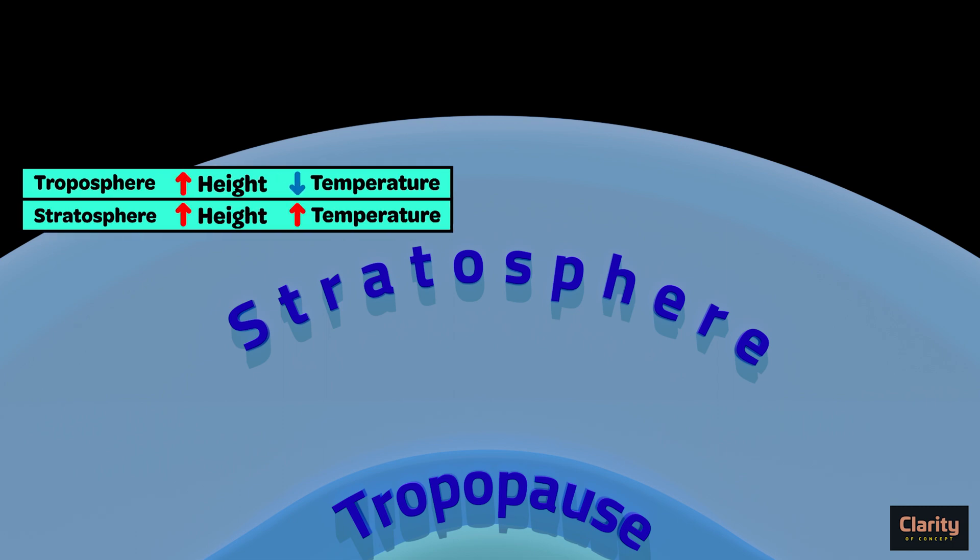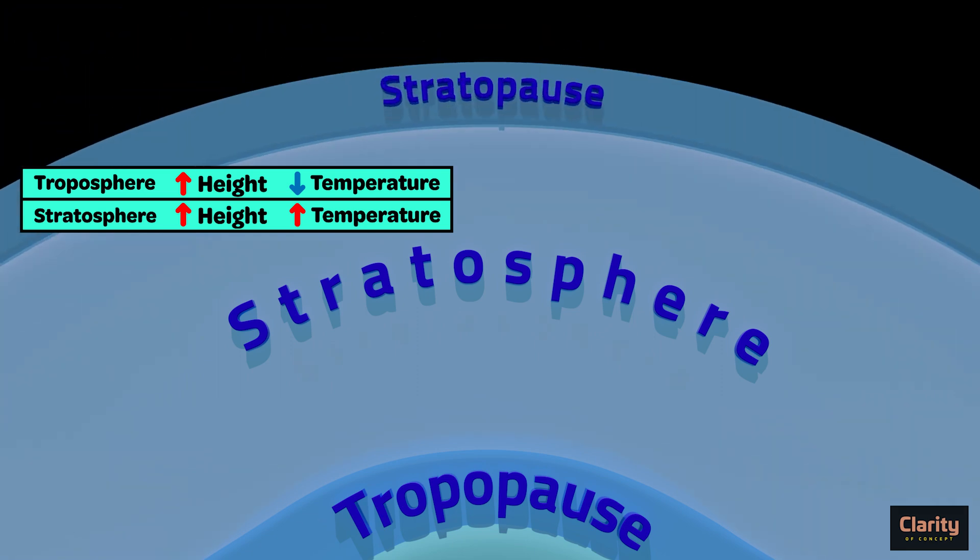Temperature remains constant in the lower parts of stratosphere. But it starts increasing from some distance and reaches up to 0 degree Celsius near stratopause. Stratopause separates stratosphere from above layer. Temperature starts increasing in stratosphere because stratosphere contains ozone layer. Ozone layer absorbs harmful UV rays of the sun. This causes temperature to increase. Near stratopause, temperature is around 0 degree Celsius from nearly minus 80 degree Celsius temperature just below the tropopause.